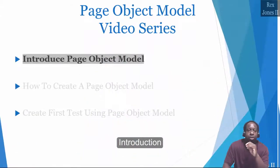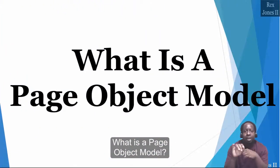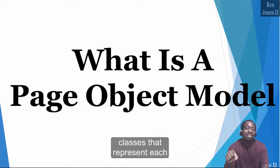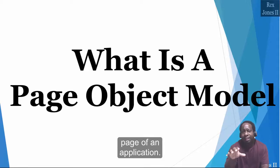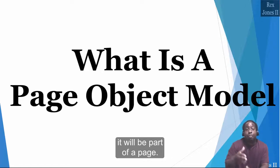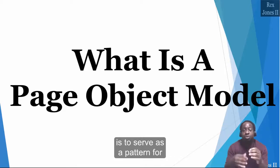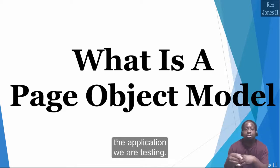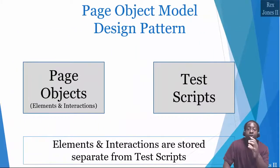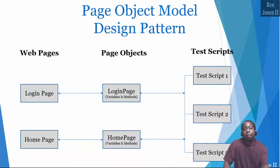A page object model is a popular design pattern with classes that represent each page of an application. In some cases it will be the entire page, in other cases it will be part of a page. The purpose of a page object model is to serve as a pattern for the application we are testing. Our elements and interactions are stored separate from the test script.